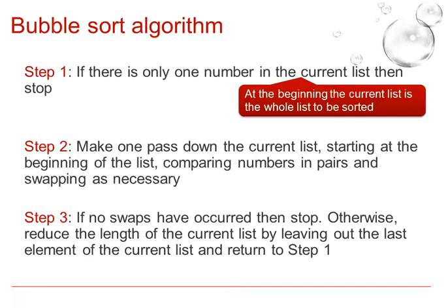Step 2, make one pass down the current list, starting at the beginning of a list, comparing numbers in pairs and swapping them as necessary. We swap of course depending on whether we want to have an ascending order or a descending order.